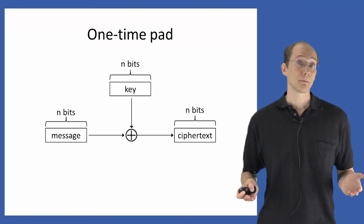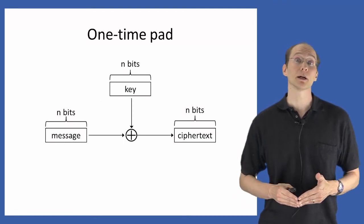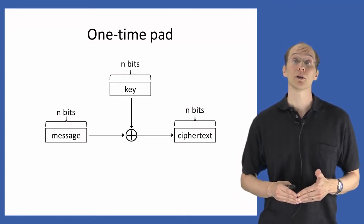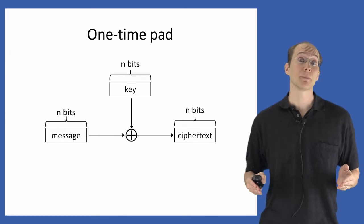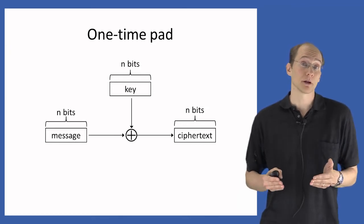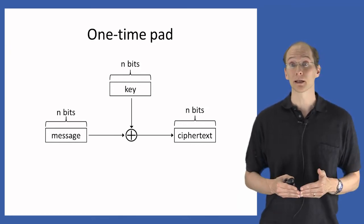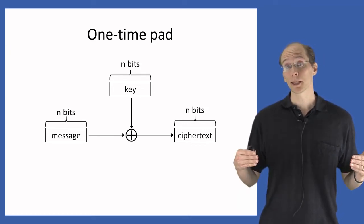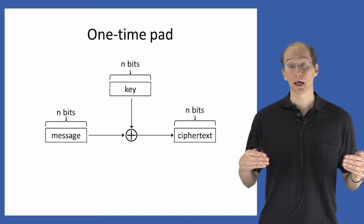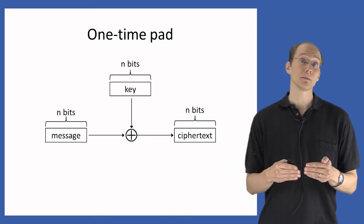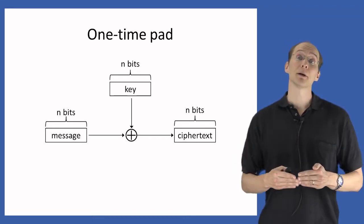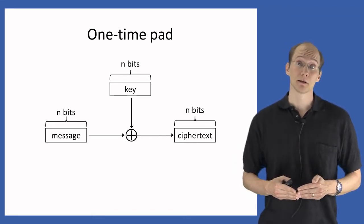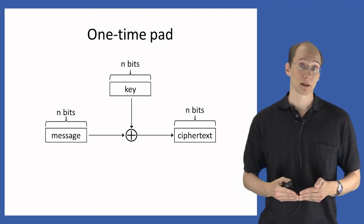In pictures, the message and the key are both n-bit strings — n-bit blocks. We simply XOR them together, resulting in an n-bit ciphertext output by this process.